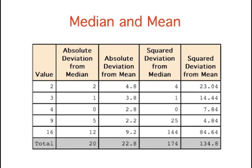Here, we compare the mean and median for this small set of data. The median is 4.0 and the mean is 6.8. Looking at the first row, the absolute difference between the value 2 and the median of 4 is 2. The absolute difference between 2 and the mean of 6.8 is 4.8. Squaring these values, we find that the squared deviation from the median is 4 and the squared deviation from the mean is 23.04.